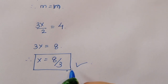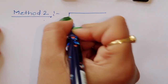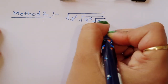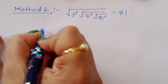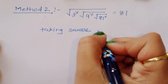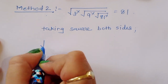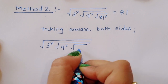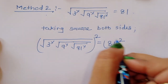This is the first method. Now we are doing a second method. In method 2, we have square root of 3 power x, times square root of 9 power x, times square root of 81 power x equals 81. We will take the square of both sides.